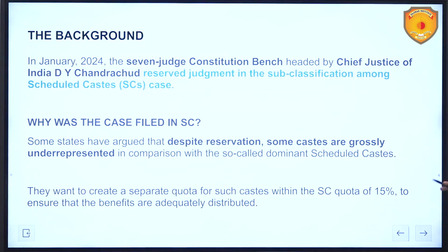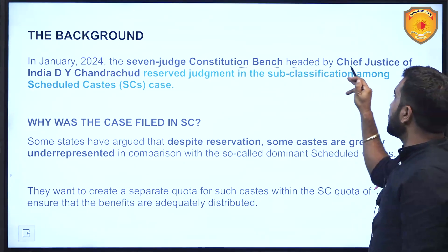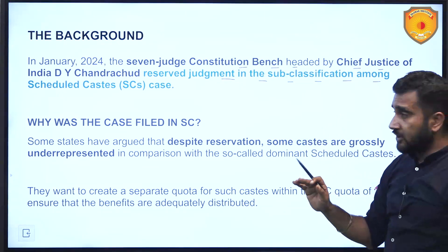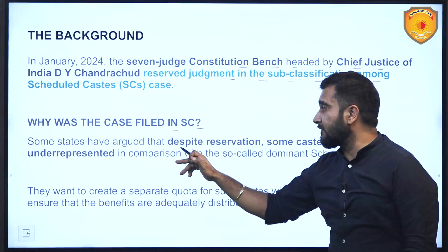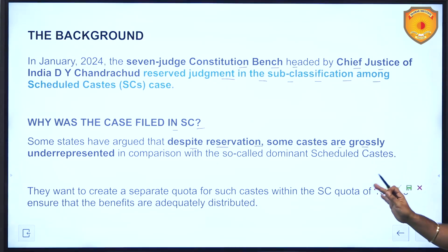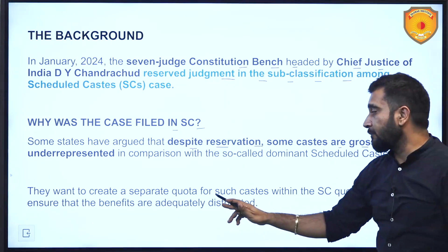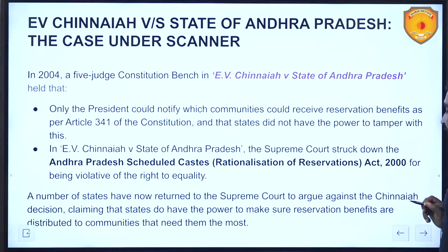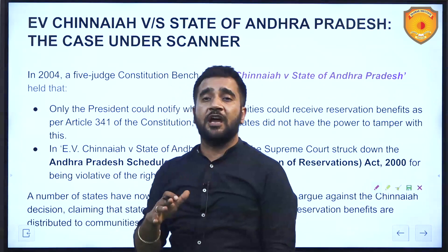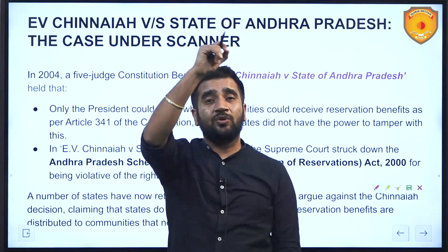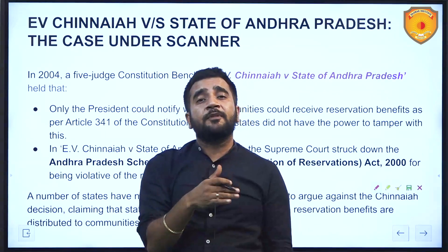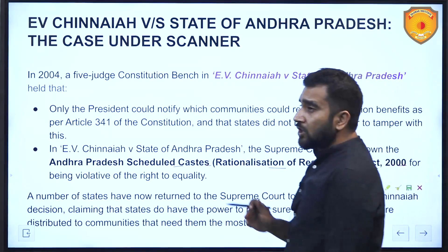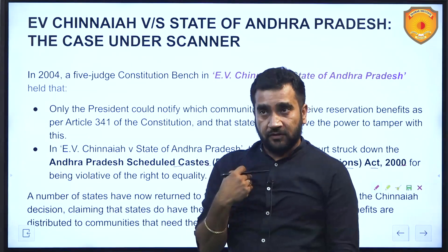The background: in January 2024, a seven-judge constitution bench headed by Chief Justice D.Y. Chandrachur reserved the judgment in the sub-classification among Scheduled Castes case. Why was the case filed? Some states argued that despite reservation, certain castes are grossly underrepresented in services and employment, and they wanted to create a separate quota for such castes within the existing 15% SC quota. Another key case was E.V. Chinnaiah versus State of Andhra Pradesh. In the year 2000, the Andhra Pradesh state government passed the Andhra Pradesh Scheduled Castes Rationalization of Reservations Act 2000, sub-classifying the SC category to give more benefits to the lower rung.